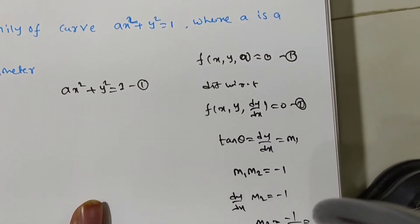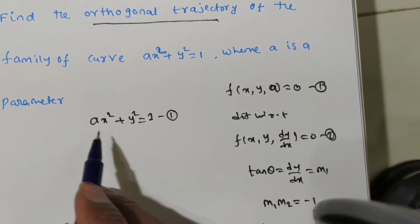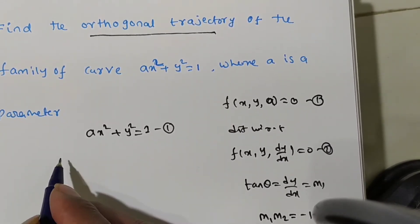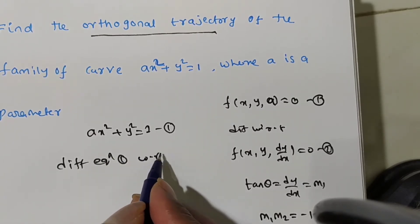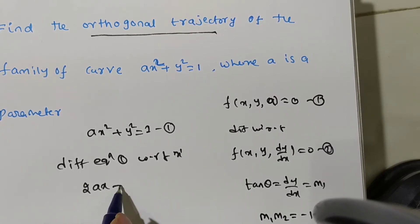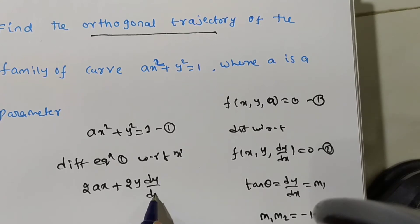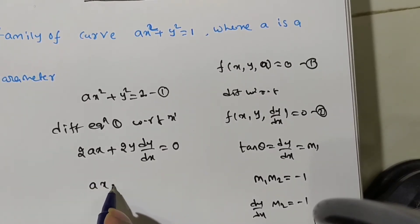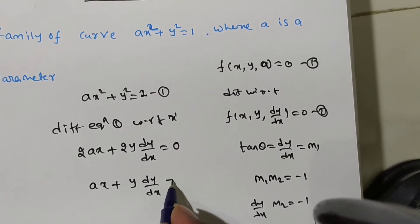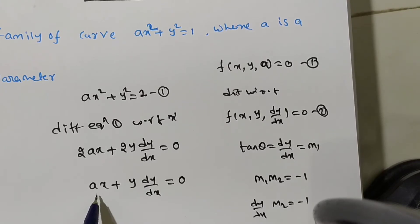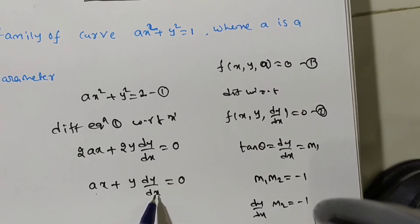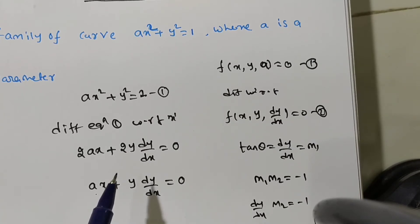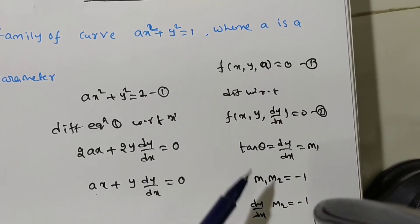Now solving the given curve: Ax² + y² = 1 (equation 1). Differentiate with respect to X: 2Ax + 2y·(dy/dx) = 0, which simplifies to Ax + y·(dy/dx) = 0. However, this still contains the parameter A, so it is not yet a pure differential equation. We must eliminate A.